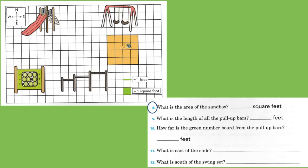Number eight. What is the area of the sandbox? Here's the sandbox right here. Let's count. One, two, three, four, five, six, seven, eight, nine, ten, eleven, twelve, thirteen, fourteen, fifteen, sixteen. Sixteen square feet.